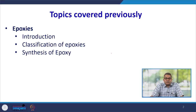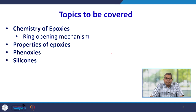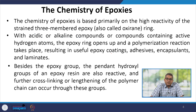The previous segment was devoted towards Epoxies, where we discussed the introductory part of Epoxies used in the polymeric system. We discussed the classification scheme of Epoxies and how we can synthesize them. In this particular segment, we are going to discuss the chemistry aspect of Epoxies like ring opening mechanism, then the properties of Epoxies, then Phenoxys and Silicones.